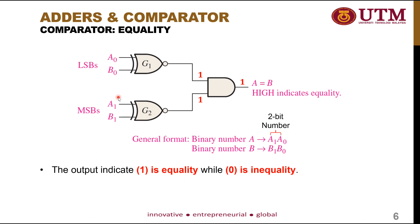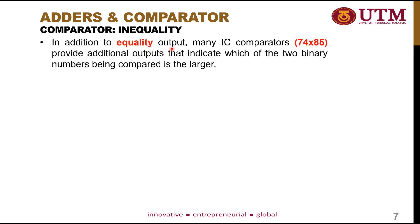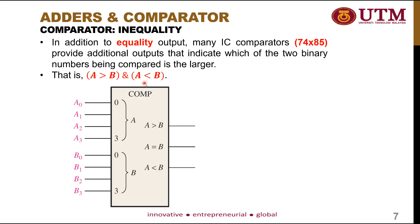In addition to equality output, many IC comparators — for example, the 74x85 — provide additional outputs indicating which of the two binary numbers is larger: A greater than B, and A less than B. As seen from the IC pin configuration, it has 4 inputs for A and 4 inputs for B, meaning it can compare two variables with up to 4 bits each. The 3 outputs are: A greater than B, A equal to B, and A less than B.